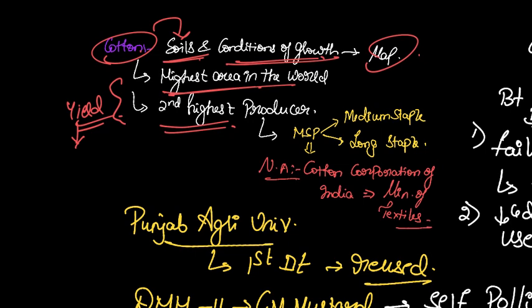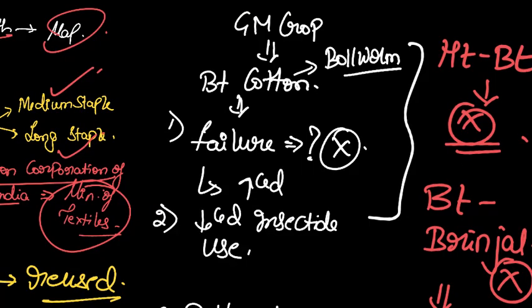So we have to focus on increasing the yield. Now with respect to MSP, another fact you have to know is: MSP is declared every season for two varieties - one medium staple, long staple. So what is the nodal agency which is dealing with the procurement of cotton at MSP? It is the Cotton Corporation of India. It is under the Ministry of Textiles, not agricultural ministry. Please focus on this point.